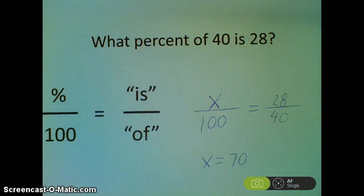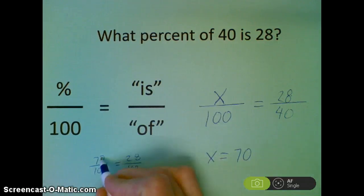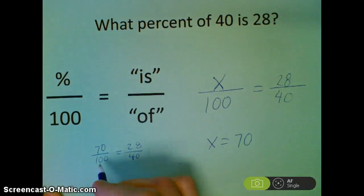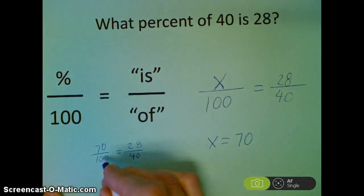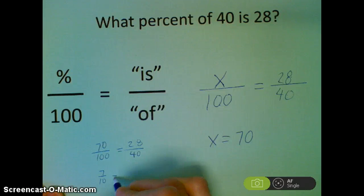Now take a look at your answer. Another way of testing this, I'm going to set up the answer: 70 over 100 equals 28 over 40. These are equivalent fractions. I mean, proportions are just equivalent fractions. So one way I can test it is to simplify both of these and see if I have the right numbers. 70 and 100 can both be divided by 10, so that would give me 7 tenths. And 28 and 40 can both be divided by 4, so that would also give me 7 tenths. So I did my math correctly.